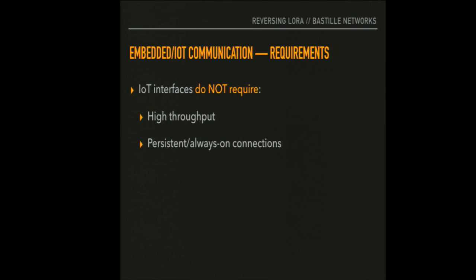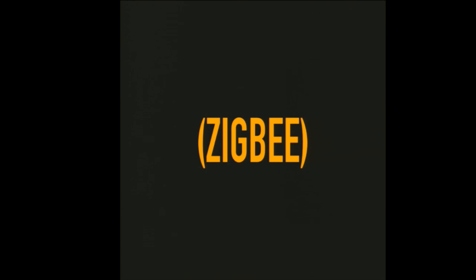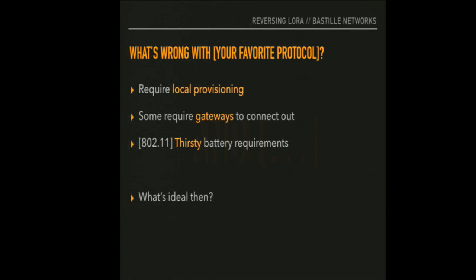Now let's talk about what's not required. When you're connecting devices like this, high throughput and persistent always-on connections are often things we don't really need. If you have a sensor reporting GPS every 10 minutes or so, it doesn't really require an LTE pipe. So IoT devices are grossly over-served by some of the common interfaces out there. We're often talking about things like 802.15.4, Zigbee, 802.11 Wi-Fi, Bluetooth, Bluetooth Low Energy — but all of these protocols require some local provisioning and are not great on battery.